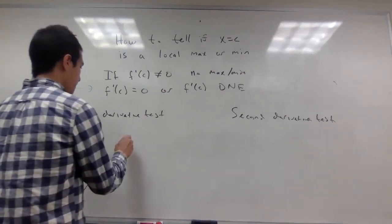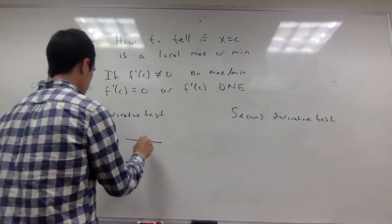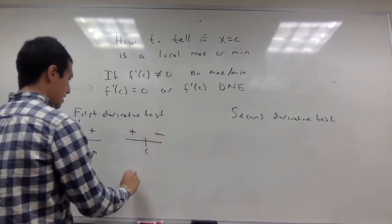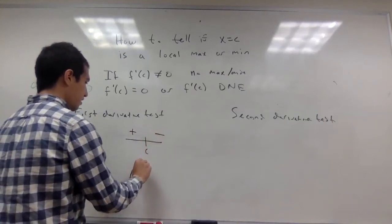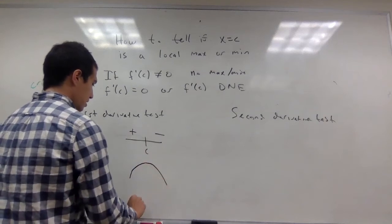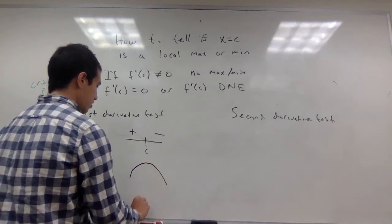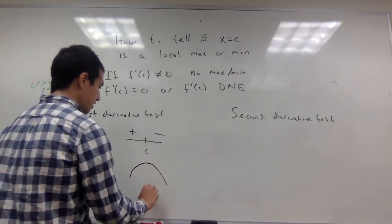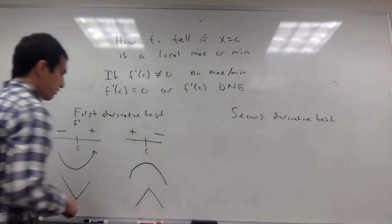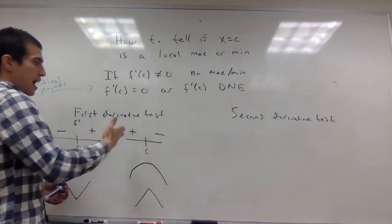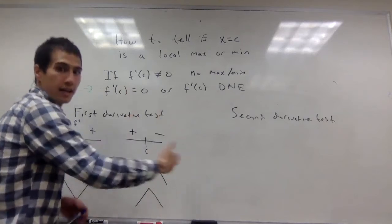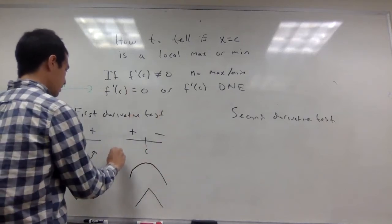If on the other hand it's the opposite — if the first derivative changes from positive to negative — the function is increasing, maybe the derivative is 0 or undefined at C, and then it's decreasing. The first derivative test says if the first derivative changes from positive to negative, then this is a local max.